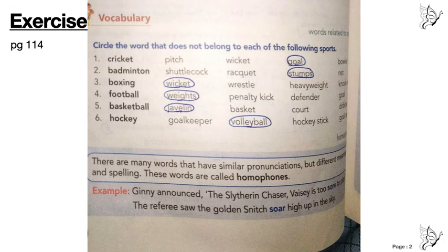Next page number 114, circle the word that does not belong to each of the following sports. Number 1 goal, 2 stumps, 3 wicket, 4 weights, 5 javelin, 6 volleyball.